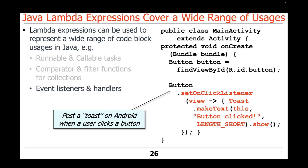You could also use lambda expressions for event listeners and event handlers. Here's an example from Android where we're going to post a toast on the Android user interface thread whenever a user clicks a button. When the user clicks a button, this click listener will pop up a toast that says 'button clicked' and it'll display on the screen very briefly.